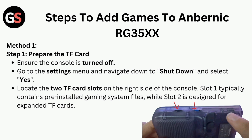Method 1, Step 1: Prepare the TF card. Ensure the console is turned off — go to the Settings menu, navigate down to Shutdown, and select it. Locate the two TF card slots on the right side of the console. Slot 1 typically contains the pre-installed gaming system files.